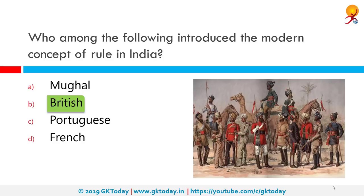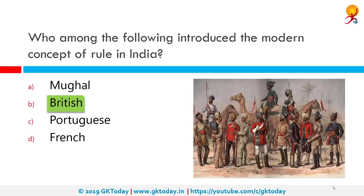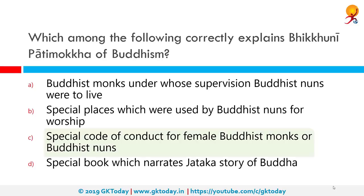Which among the following correctly explains Bhikkuni Patimokha in Buddhism? That would be the special code of conduct for female Buddhist monks or Buddhist nuns. These are basic codes of discipline for Bhikkunis and contain 311 rules, of which 181 are shared with the Bhikkhu Patimokha.